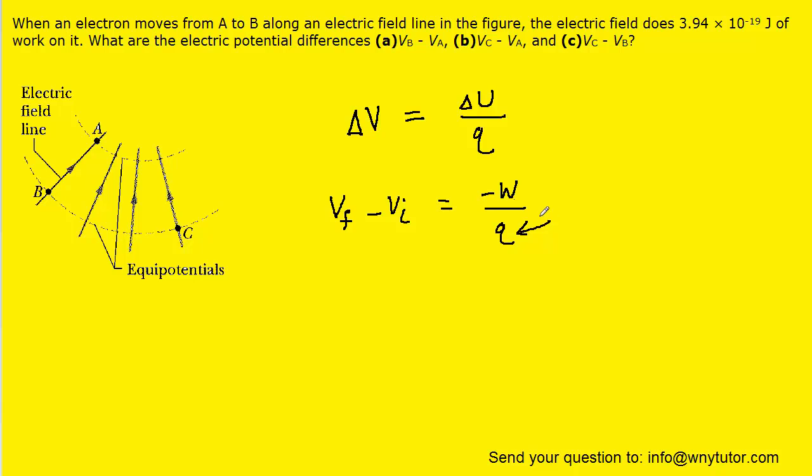Also, for the charge Q, since we're moving an electron, we can substitute in the value for the charge on an electron, which turns out to be negative E. And E is the elementary charge that's equal to 1.6 times 10 to the minus 19th Coulombs.